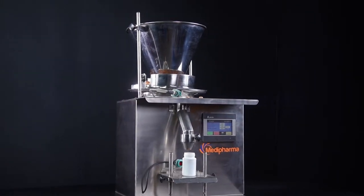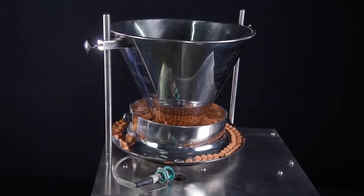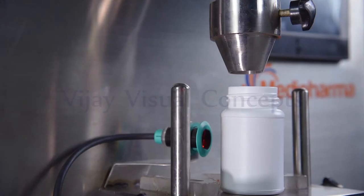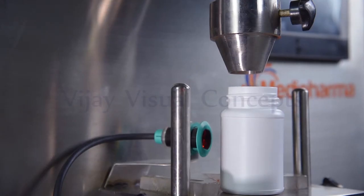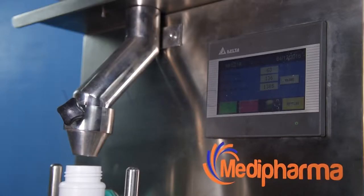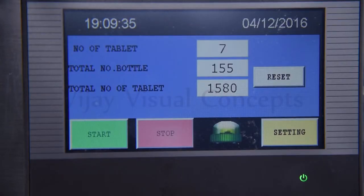Tablet counting machine consists of a rotary vibrator serving as a guide track. The precision vibratory controller ensures accurate dispensing of the product. It has a PLC controlled counting device with touch options.